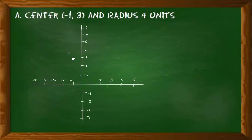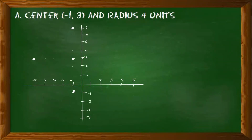Since we have the center of the circle, we can directly use the radius to create the circle. Count 4 units going up from the center, 4 units going down, 4 units to the left, and 4 units to the right — placing a point at each. You are done plotting all the points using the center and the radius. Lastly, connect all the dots to create a circle.